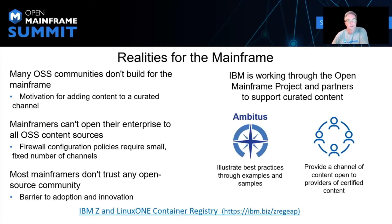While I've been discussing mainframe participation in the open source community as an activity that the community embraces, there are some realities we have to acknowledge. The open source community isn't monolithic. Projects differ in their acceptance of new members, and we often hear that a given group doesn't have the bandwidth to work with another platform. Others are more open and willing to include enhancements for the mainframe if we provide them. We can work with these groups and the small number of projects willing to fully embrace the mainframe as a supported platform. The Open Mainframe Project exists in some measure to build an ecosystem of open source mainframers willing to advocate for the platform within these friendly projects. It's a long game to play, but we do see success in some key areas.